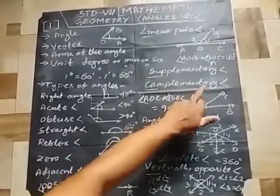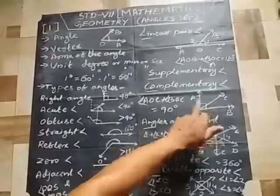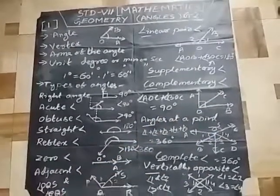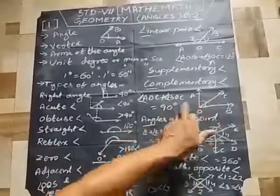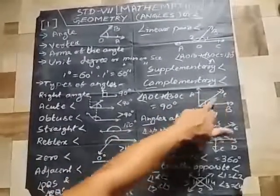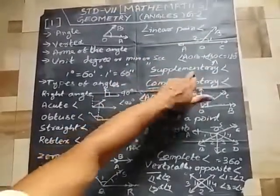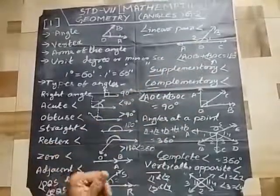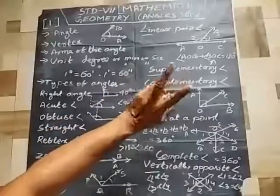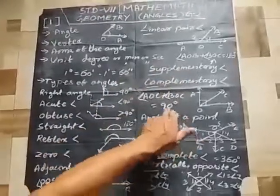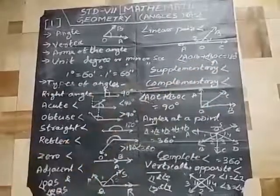Complementary angles — when the sum of two angles is equal to 90 degrees, they are known as complementary angles. For example, if one angle is 30 degrees, its complementary angle is 90 minus 30, which is 60 degrees. If one angle is 120 degrees, its supplementary angle is 180 minus 120, which is 60 degrees. Sum of complementary angles equals 90 degrees; sum of supplementary angles equals 180 degrees.